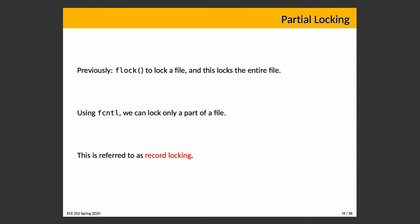Locking only part of a file is referred to as record locking — a record being a data record in a file. We don't do this very much anymore because databases handle this kind of thing, but it is a valid option. Locking just part of a file allows for more concurrency. If a file contains data about many users, locking the whole file is not optimal — why should modifying user A's record prevent you from doing anything with user B's record?